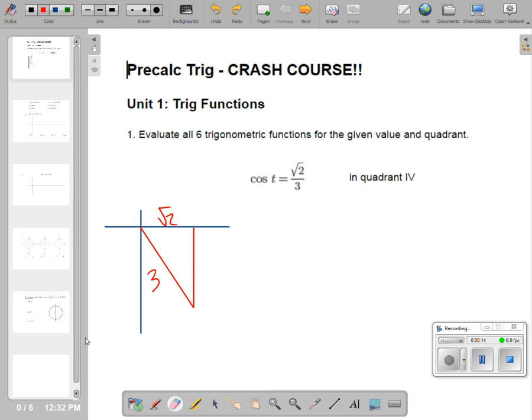So I've gone ahead and drawn myself a little helper triangle. Cosine is adjacent over hypotenuse, so adjacent hypotenuse. And then I can use Pythagorean theorem here. So it would be radical two squared plus, I don't know what this y value is, equals three squared. That's nine minus two, because that's two. So this is the square root of seven. So now that I have the triangle drawn, I just need to find all my trig ratios.